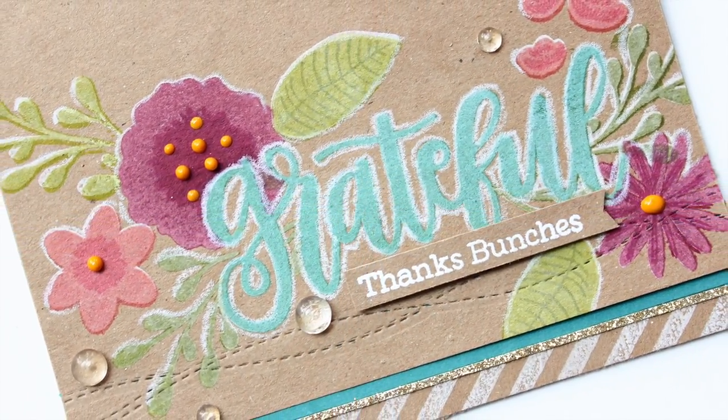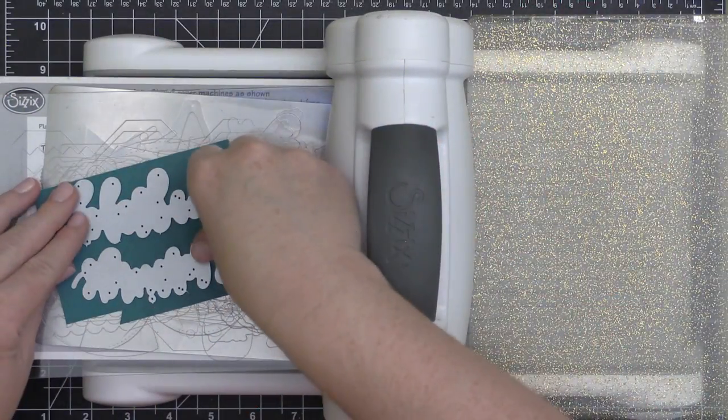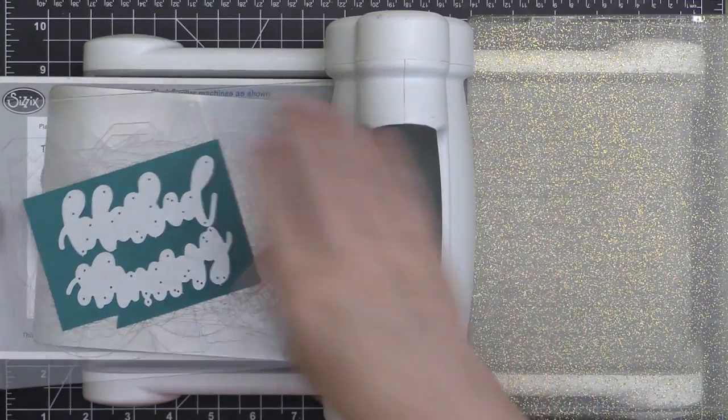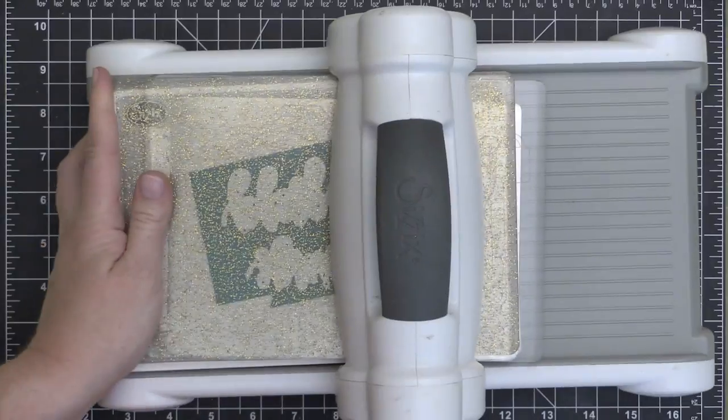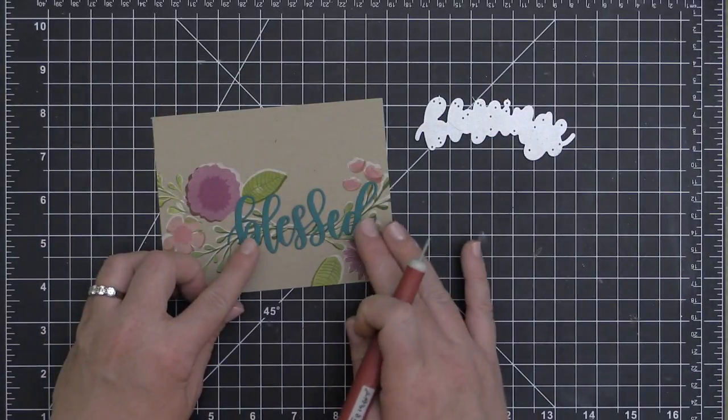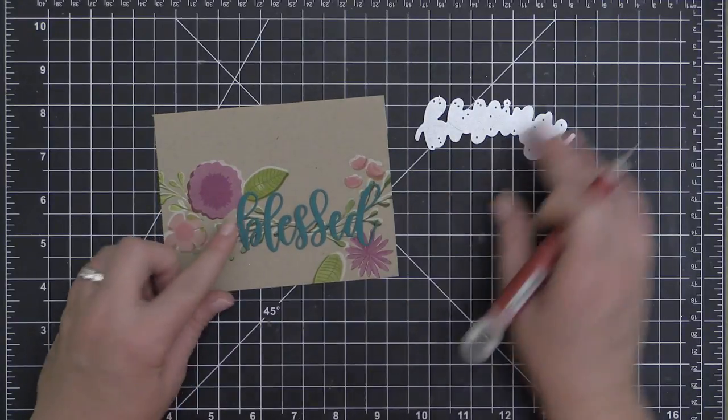I know not all of you want to take the time to mask, so I'm going to show you how to create the same kind of card but instead of masking, just to use a die-cut sentiment over the top. I'm cutting out this Blessed and Blessings die set from some teal cardstock.